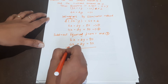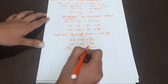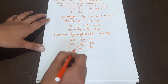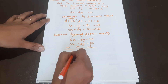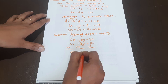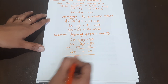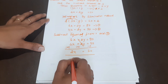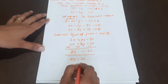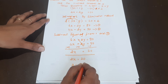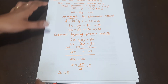The signs: minus and minus cancel out. So subtracting: 6x minus 4x equals 2x. 2x is equal to 30. Therefore x is equal to 30 divided by 2, which gives x equals 15.